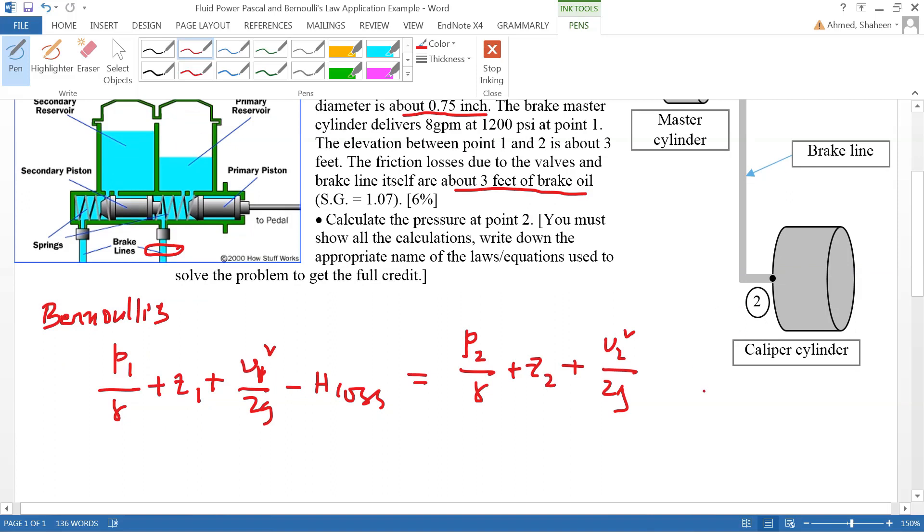V1 equals V2, so they're not really flowing at high velocity. Even though they're not the same diameter, they're almost close to zero, so these two parts are zero. Now if we make point two our ground, then Z2 will be zero as well.